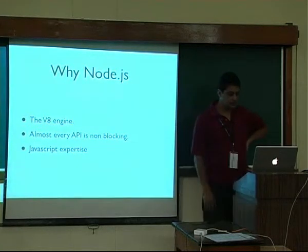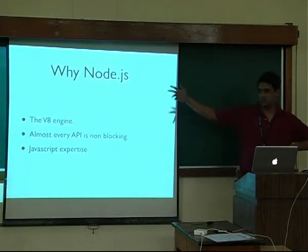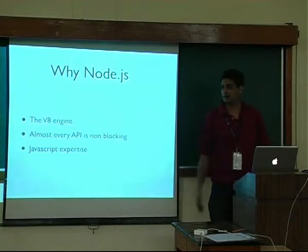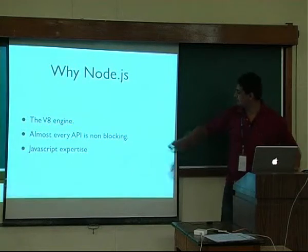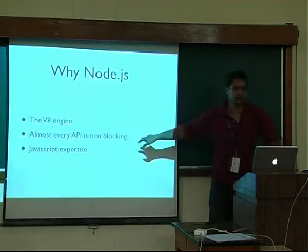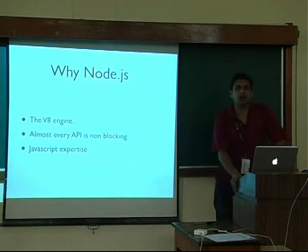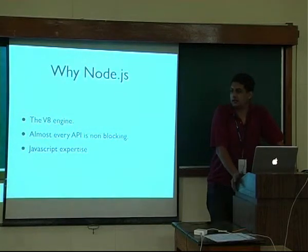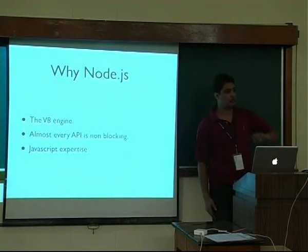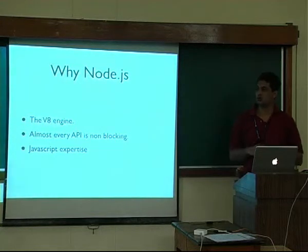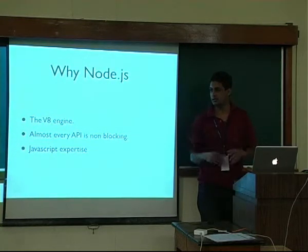It boils down to three things for us. First, there's the V8 engine, which is really, really fast. Second, almost every API is non-blocking. This is more important than it might seem at first sight. Any library you use for Node you can use safely. With EventMachine, the Ruby equivalent, the problem is that for every single plugin you have to look through all its dependencies and make sure nobody is making blocking calls that might stall your server. With Node, you almost never have that problem — there are very few blocking calls you can make.